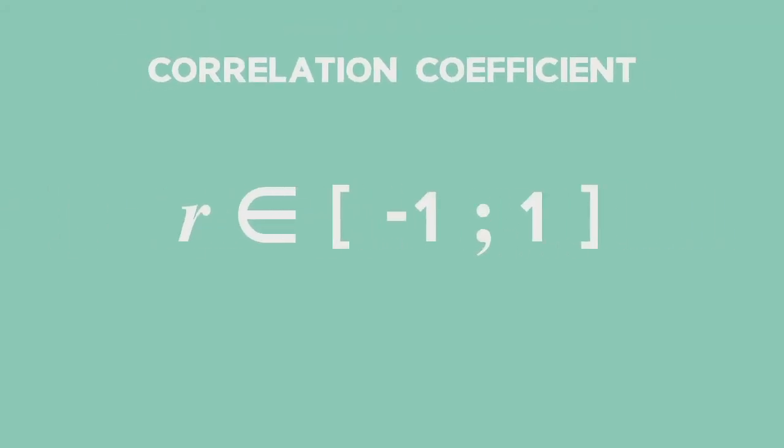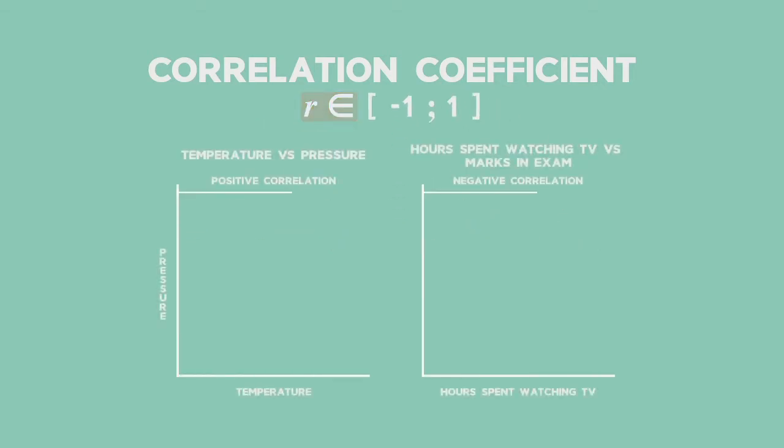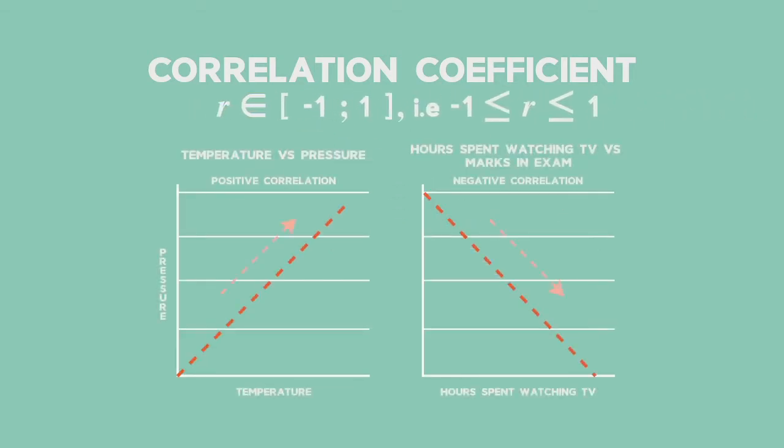The linear correlation coefficient r measures the strength and direction of a relationship between two variables. The correlation coefficient r can take on any value between and including minus 1 to positive 1.